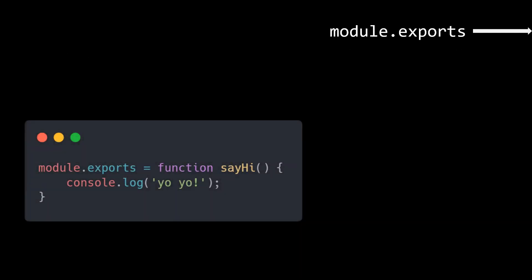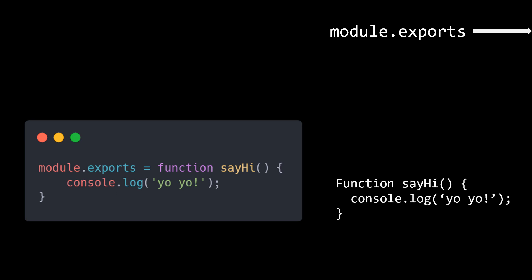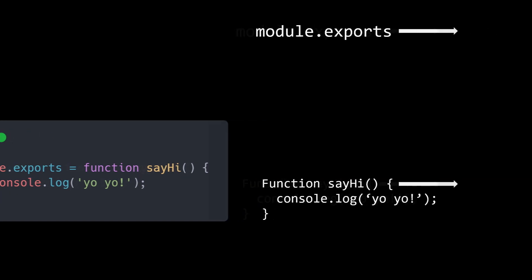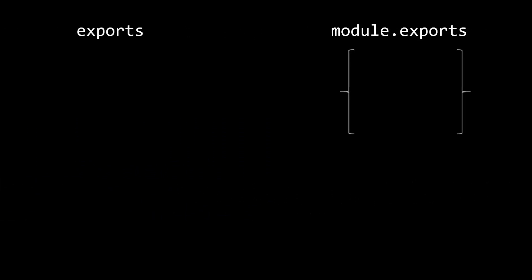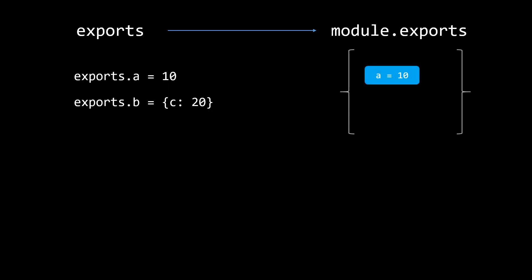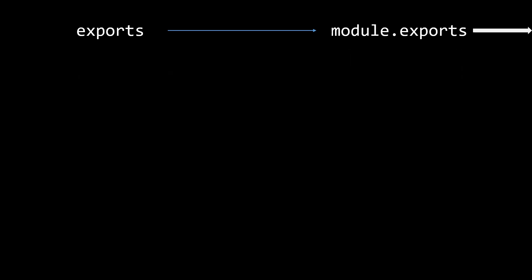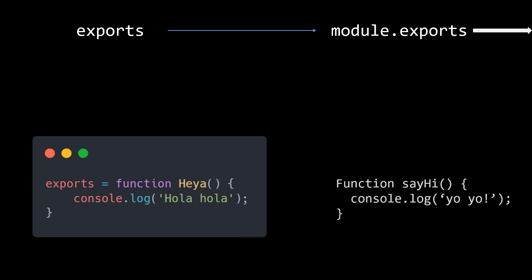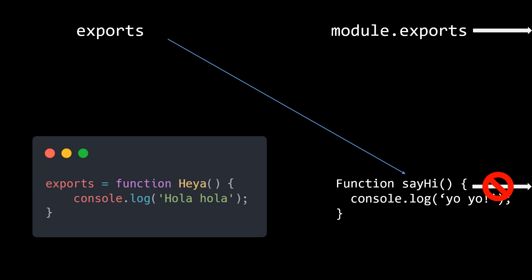Those keys get exported when the module.exports object is shared with the other file. Similarly, if we assign the reference of module.exports to a function like we saw earlier, that reference also gets shared when Node shares the module.exports with the requiring file. Now, the exports global variable is just a reference to the module.exports object that will eventually get exported outside. So if we add properties to exports, we are actually adding properties to the module.exports object, which gets exported as expected. But when we assign the exports variable to a function, we lose the reference to the module.exports object — exports is now pointing to a function, but that is not going to get exposed to the outside world. It is always the module.exports object which gets exposed, and it has no idea of that function.